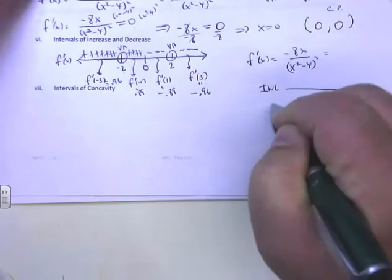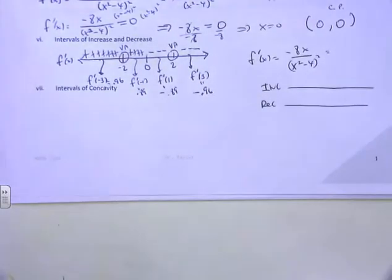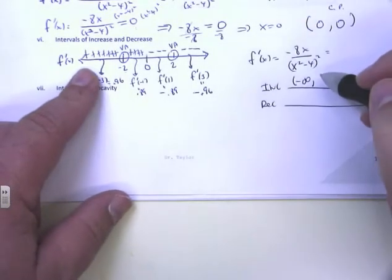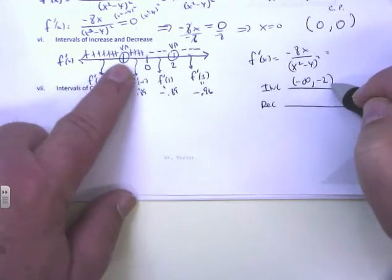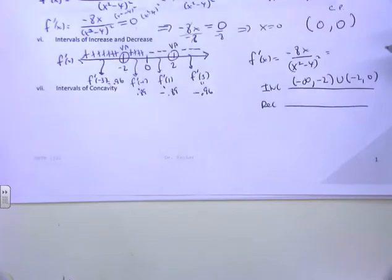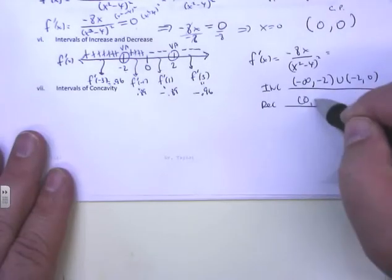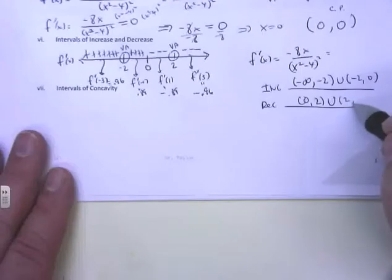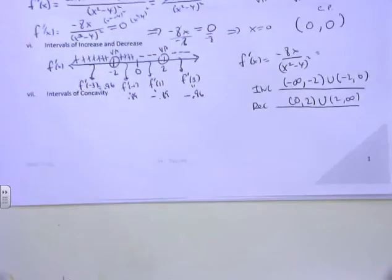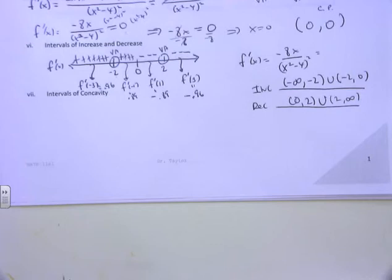So the intervals of increase are (-∞, -2) ∪ (-2, 0) — positive on both sides of -2 — and the intervals of decrease are (0, 2) ∪ (2, ∞). Always use open parentheses for intervals of increase/decrease and concavity. You never include the endpoints — right at 0 the function is neither increasing nor decreasing, and ±2 don't exist. WebWork will count it wrong if you use brackets.